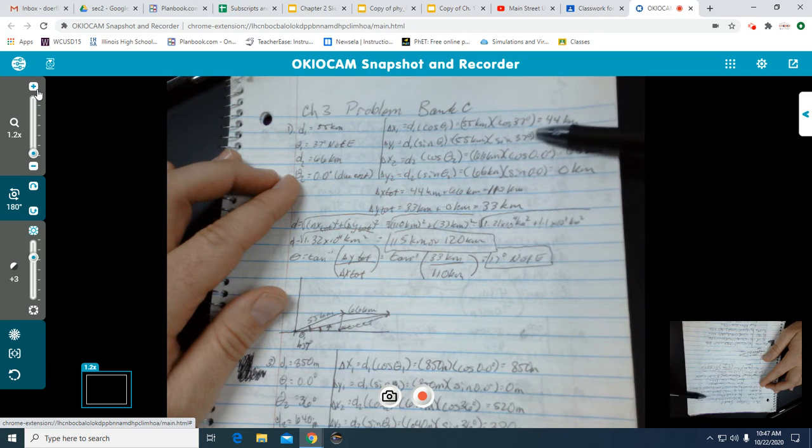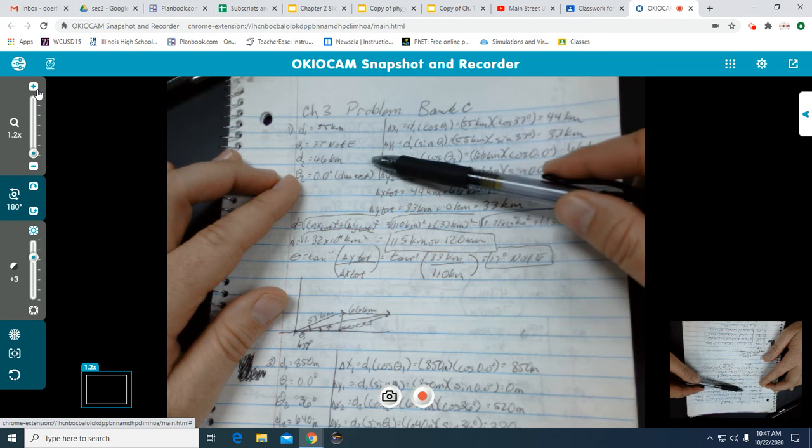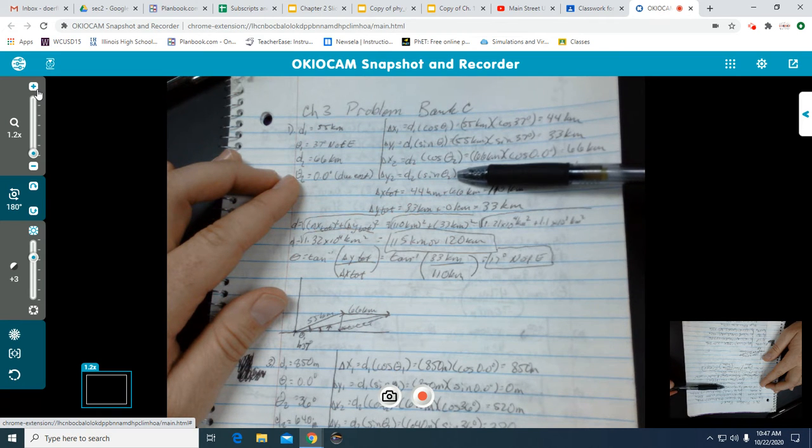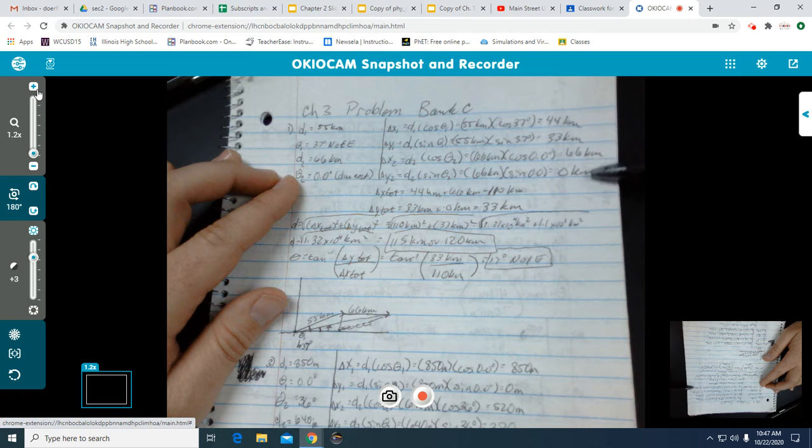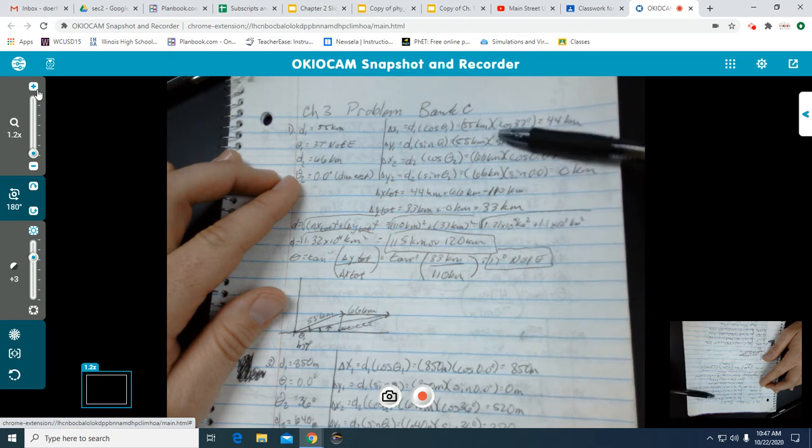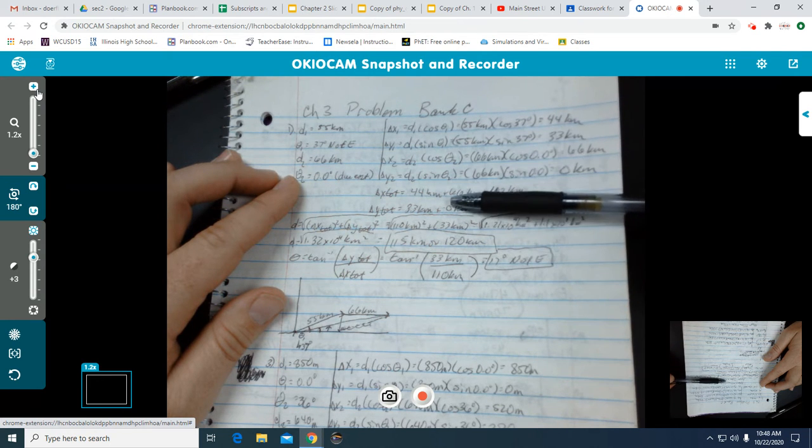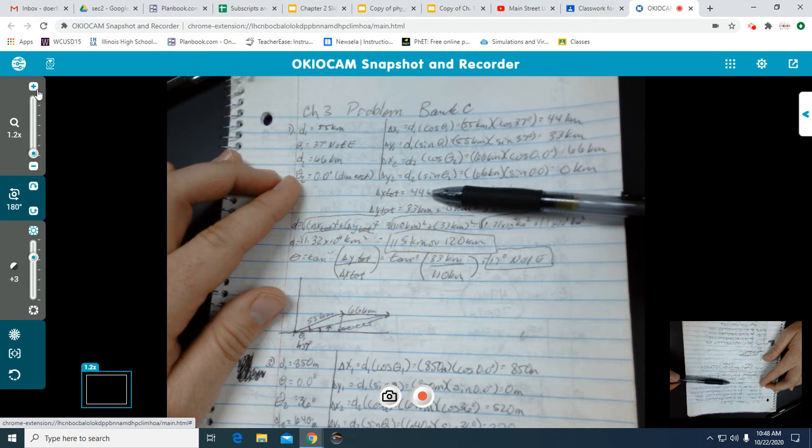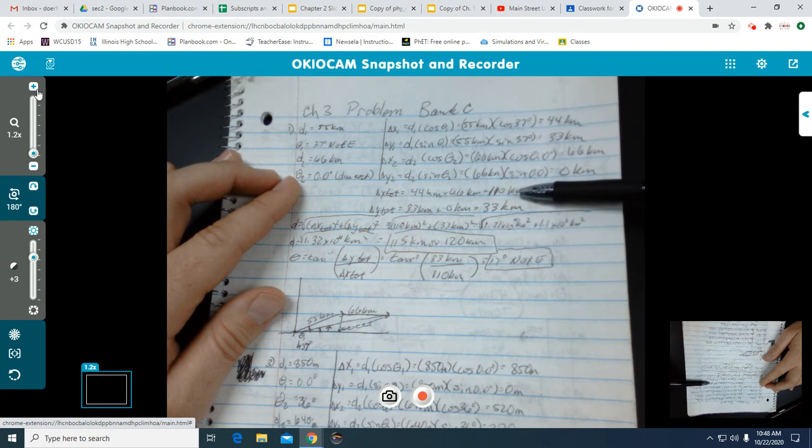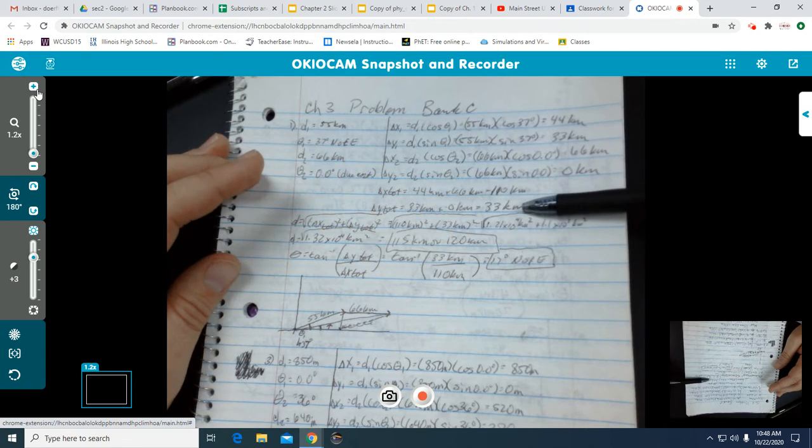I'm going to take the displacement multiplied by the trig function and the angle. For our first displacement for the x or horizontal vector, it's 44 kilometers. For the y, it's 33. Moving on to the next, where it's 66 kilometers in length, nearly due east, you find the x is 66 kilometers and the y is 0 because if we're due east, we're not going to have any vertical components.